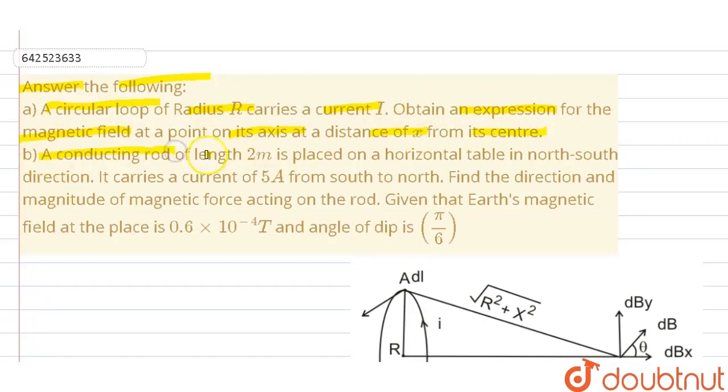B. A conducting rod of length 2m is placed on a horizontal table in north-south direction. It carries a current of 5A from south to north. Find the direction and magnitude of magnetic force acting on the rod. Given that Earth's magnetic field at the place is 0.6 × 10⁻⁴ T and angle of dip is π/6.